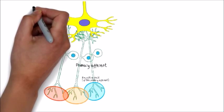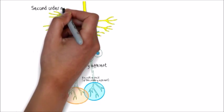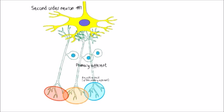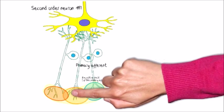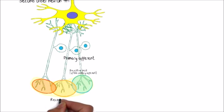Or projection neuron. The receptive field of the second-order neuron, pictured here in yellow, is the sum of the receptive fields of all those neurons that most strongly influence it.